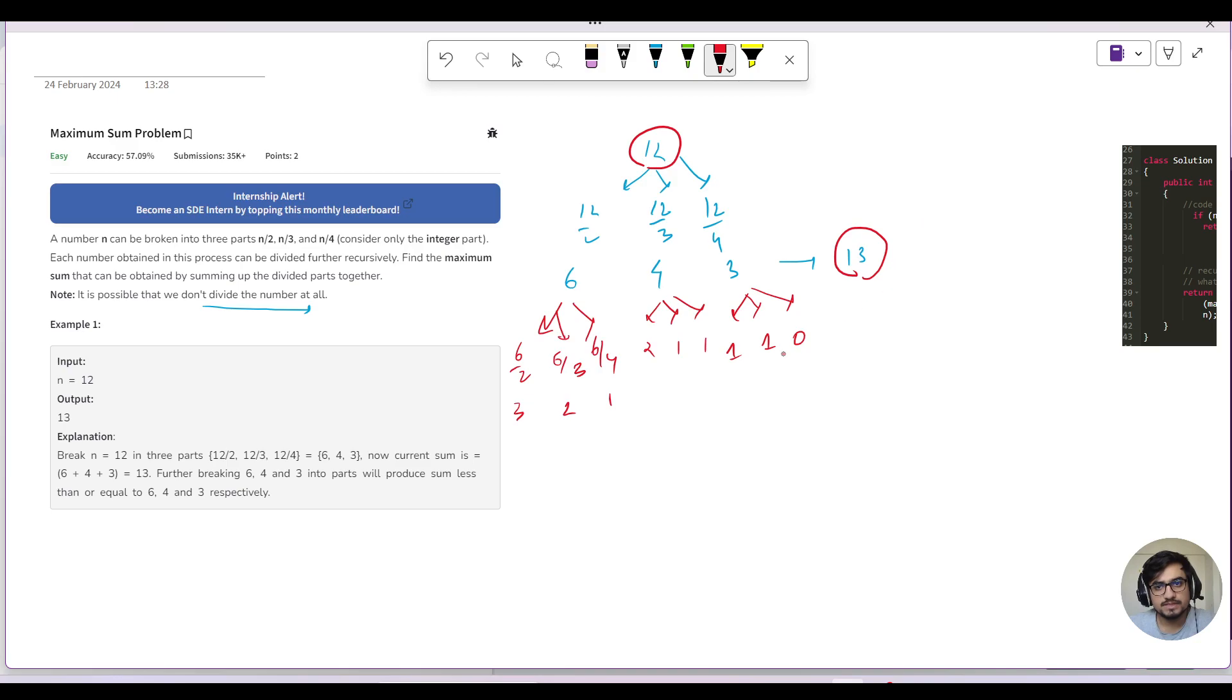Now, if we see the base cases, whenever the number is 1 or 0, like the base cases are where we hit the minimum point, right? So we will check that if you try to divide 1, that is 1 by 3 which will give you 0, 1 by 2 which will give you 0, 1 by 4 which gives you 0. So after division of them, it is 0, and the number itself is pointing to 1. So we have to return maximum, right? So if there is 1, we have to return 1. Similarly, if there is 0, then we will not get 0 and 0. So basically, if there is number equals to 1 or equals to 0, then in that case I will just say return n.